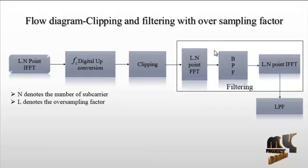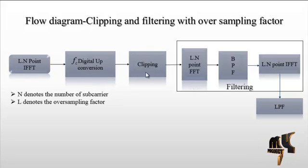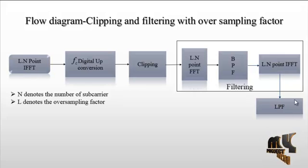This is the flow diagram of clipping and filtering with oversampling factor L and N-point IFFT. Here, L denotes the oversampling factor and N denotes the number of subcarriers, so it is an L·N point IFFT process. After the IFFT, clipping is applied to the signal values. Then another L·N point IFFT is performed, followed by a BPF — bandpass filter — which reduces noise, and finally an N-point IFFT is applied.